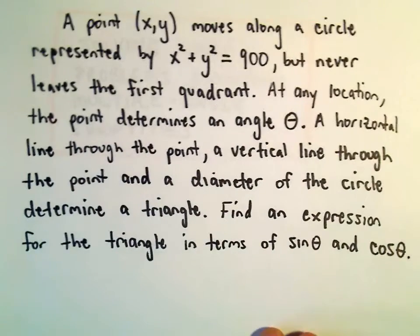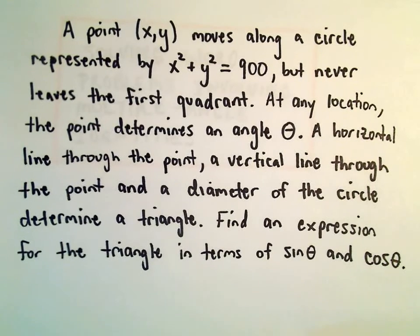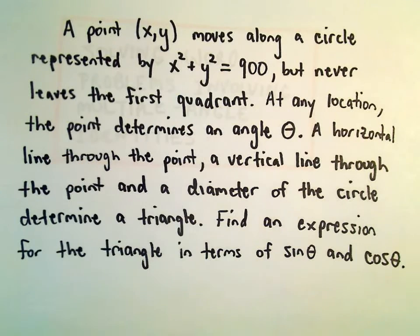Alright, in this video we're going to do an example of solving a word problem. So, suppose we've got a point (x, y) and it moves along a circle that's represented by x squared plus y squared equals 900, and it never leaves the first quadrant.